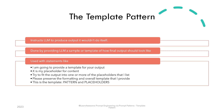The template pattern instructs the large language model to produce its output in a format it would not ordinarily use for the specified type of content being generated. This is usually done by providing the model a glimpse, sample, or template of how the final output should look like. The key contextual statements that make the magic happen are of the form: